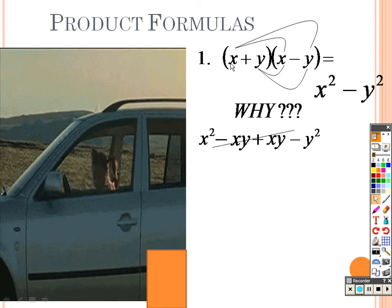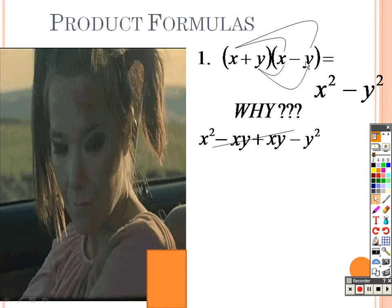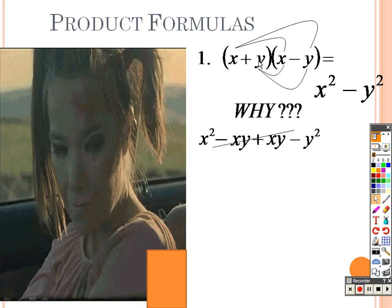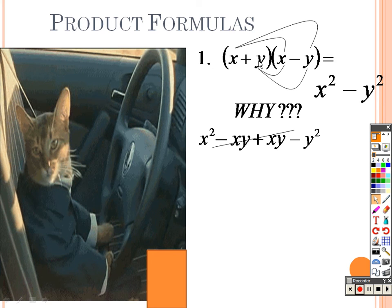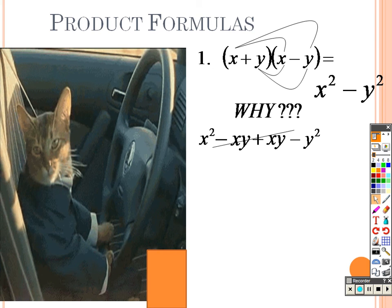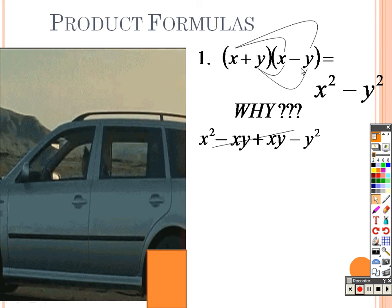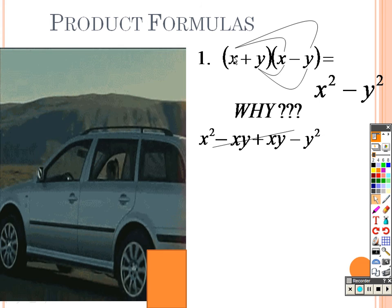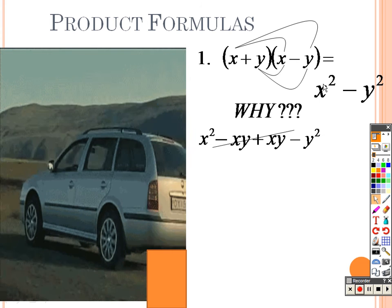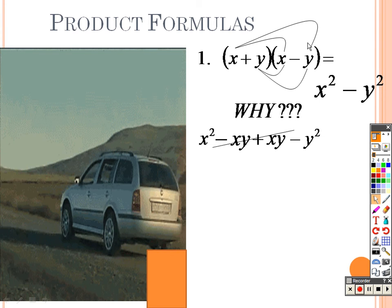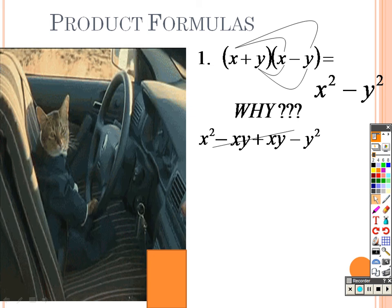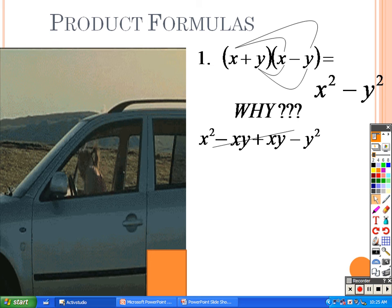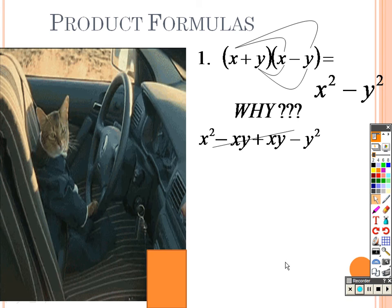So the point of this formula is: if you see two things that look almost identical except one's addition and one's subtraction, you take the first term and you square it, you take the second term and you square it, and that'll be your answer. So just something to keep in mind.